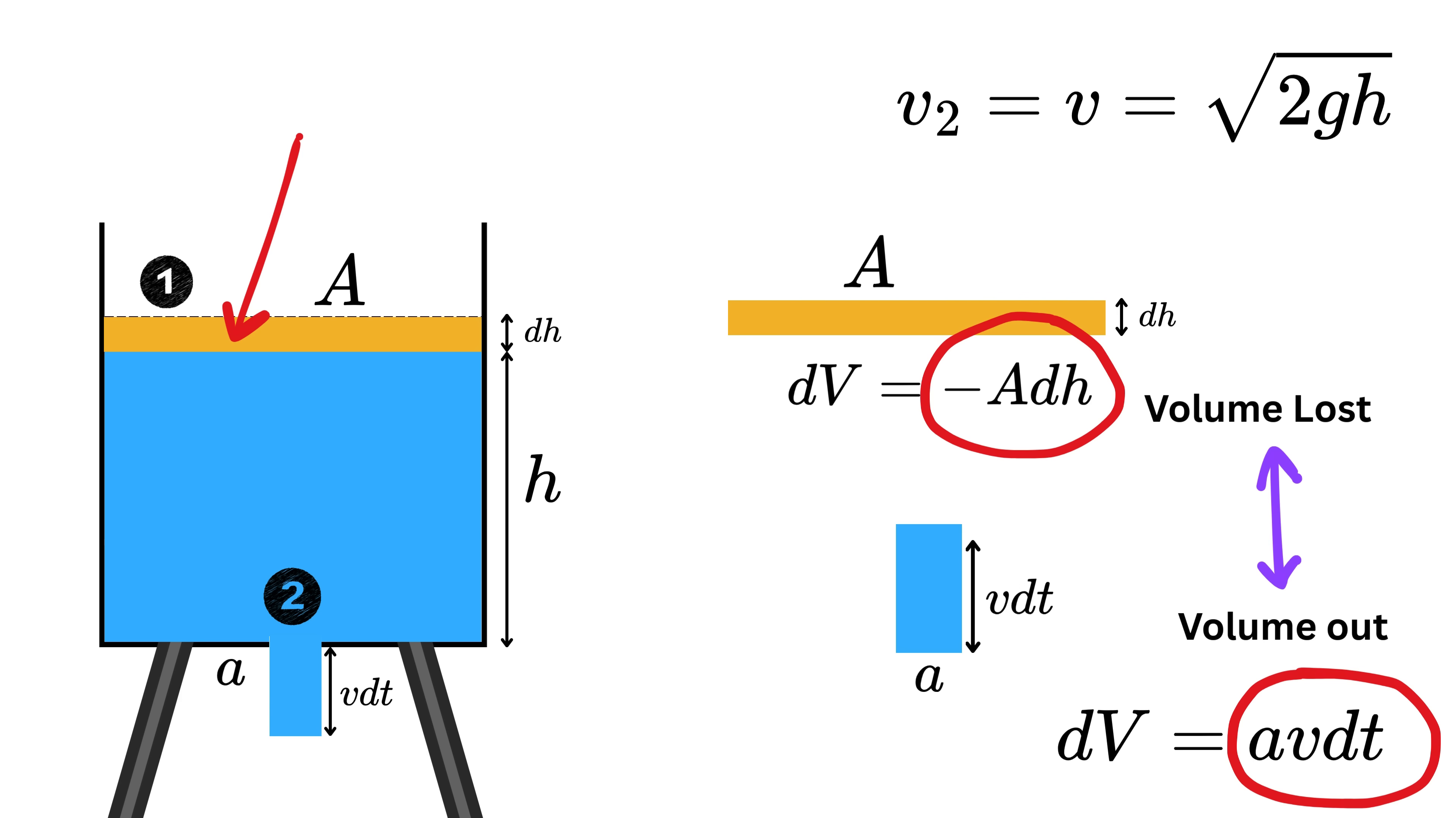That means minus A times dh is the volume lost in time dt. But this will be the same as the volume that flowed out from the hole, right? Because no water is vanishing or appearing magically, whatever left the tank must have come from the tank itself. So we equate both volumes: minus capital A times dh equals small a times v times dt.